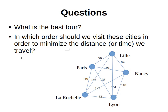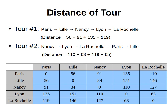Now we have some questions: what is the best tour? In other words, in which order should we visit these cities in order to minimize the distance or time we travel? Looking at this graph here, I told you before that each city has a direct road to all other cities — all of them are interconnected — and these numbers represent the distances or the time it takes to go from one city to another. So what is the best tour in terms of traveling the minimum distance?